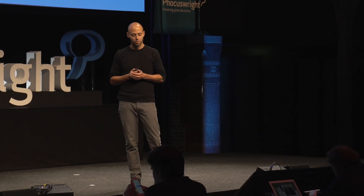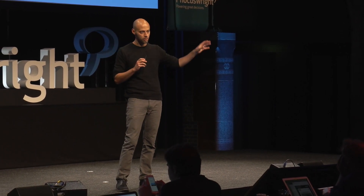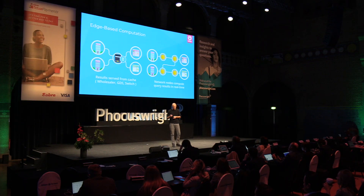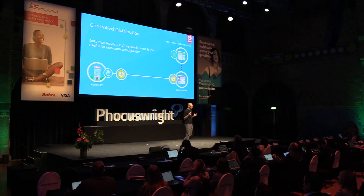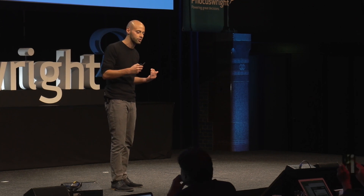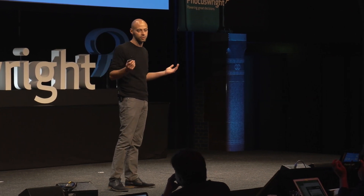An important characteristic of distributed ledger technology is that it uses an edge-based computing model, which distributes the query load to connected partners, allowing them to scale their own resources as needed to serve their customers without affecting the rest of the network. This model allows for lower latency and better privacy and security, because all data doesn't need to flow through a central set of servers. Edge-based computing is also going to help hotels prevent the onward distribution of their data, preventing non-contracted OTAs from pushing reservations back in with rates they were not even supposed to have access to.